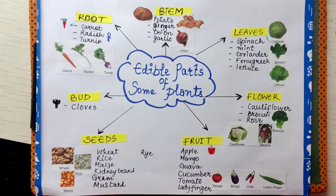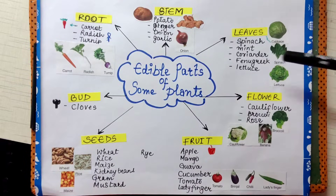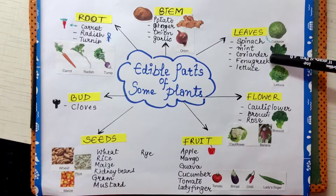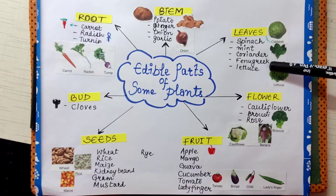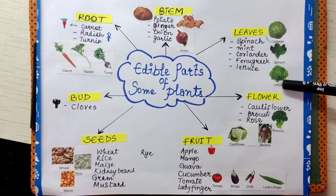Edible leaves are spinach, mint — that is pudina, coriander — that is dhania, fenugreek — that is methi, and lettuce.